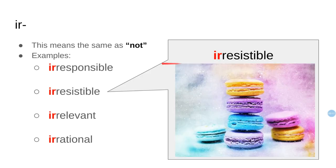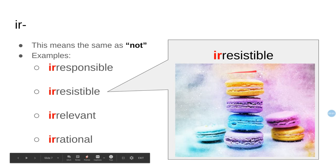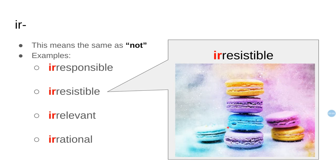Then we have 'ir-,' which means the same as 'not': irresponsible, irresistible, irrelevant, irrational. Look at these macarons — you must eat them, you want to eat them, they are irresistible. You cannot resist eating them. Irresistible means I want to eat them and I can't stop myself.